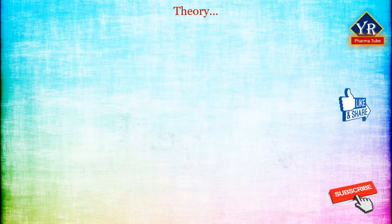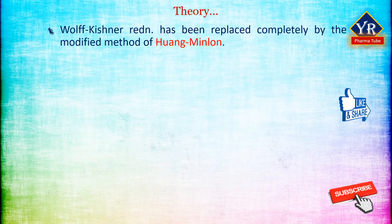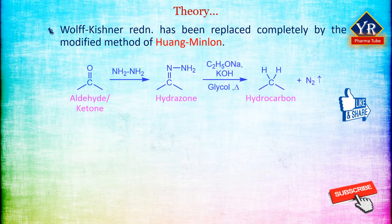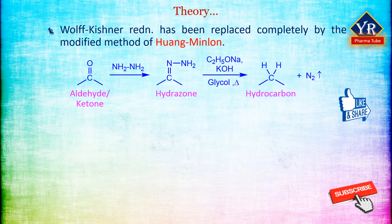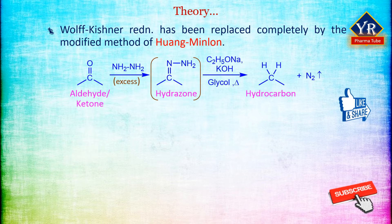Also note that compounds that cannot survive treatment with hot acid can be deoxygenated using the Wolf-Kishner reduction. The aldehydes and ketones can be conveniently reduced to hydrocarbons by this method. The classical procedure for the Wolf-Kishner reduction — the decomposition of the hydrazone in an autoclave at 200 degrees centigrade — has been replaced almost completely by the modified procedure after Huang Minlon. Instead, the aldehyde or ketone is heated with excess hydrazine hydrate in diethylene glycol as solvent.